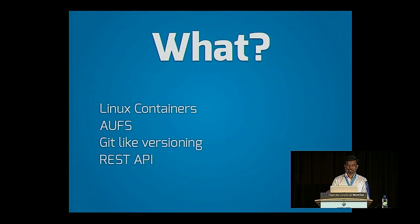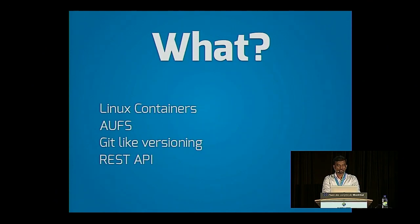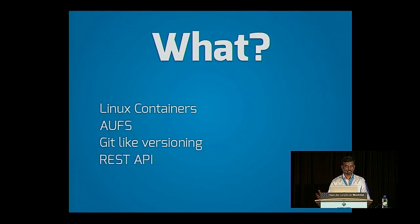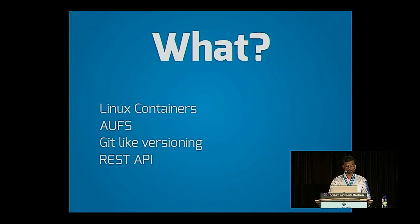In addition to sitting on top of Linux containers, Docker also provides some additional features that make it easy to use: a union file system, which we'll see what it means in a bit; a nice versioning system, kind of like Git but not quite as powerful; and a REST API that allows you to interact with Docker.